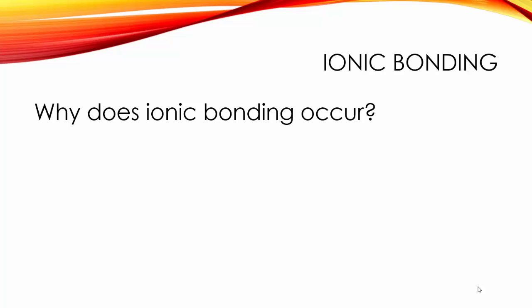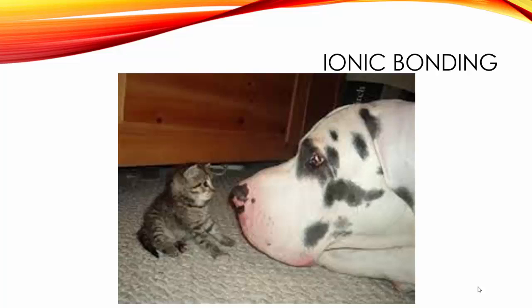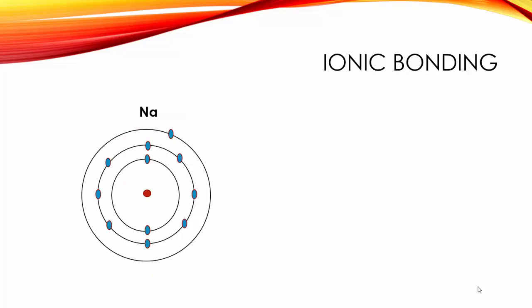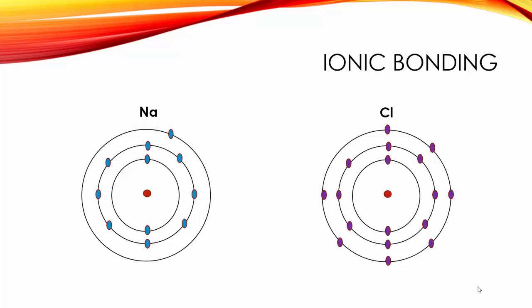So why does ionic bonding occur? Simply because opposites attract. Take a sodium atom and a chlorine atom. Sodium from the first representative group has one valence electron. Chlorine from the seventh representative group has seven valence electrons. In order to reach the octet the sodium atom will lose its valence electron and it will be transferred over to the chlorine atom.